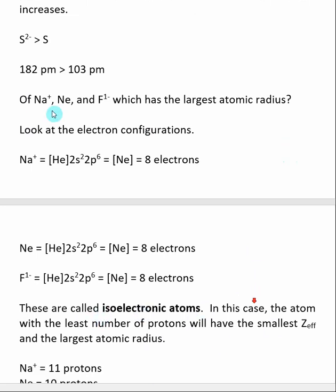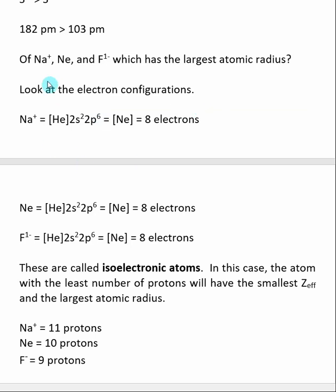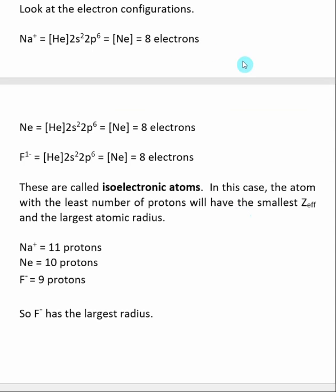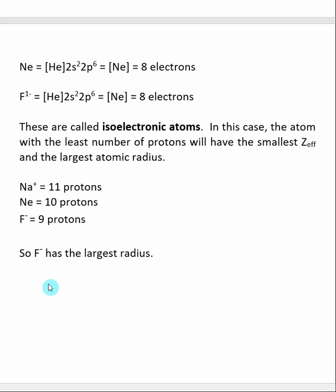The last case deals with isoelectronic atoms — species that have the same number of electrons. For example, Na+, Ne, and F- all have eight electrons. When dealing with isoelectronic species, the atom with the fewest protons will have the smallest Z-effective and therefore the largest atomic radius, because the weakest interaction with the outer electrons causes the radius to be larger. Between these three: sodium plus has 11 protons, neon has 10, and fluorine has 9. So fluorine has the fewest protons and we would expect F- to have the largest radius, followed by neon, and then Na+ as the smallest.